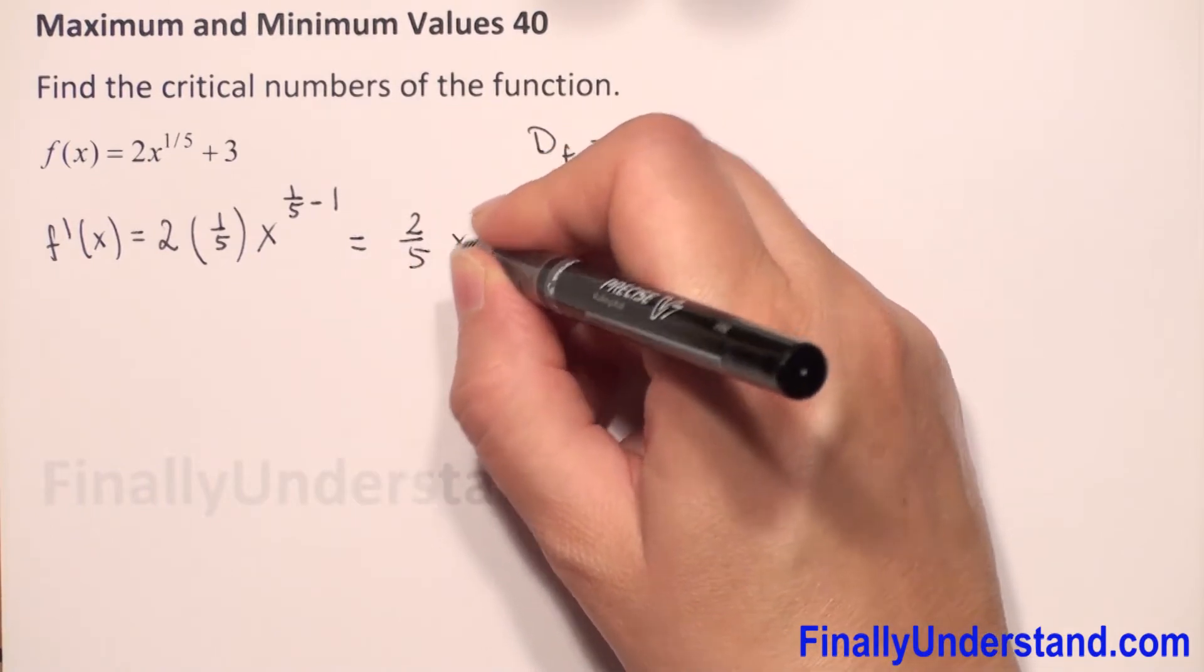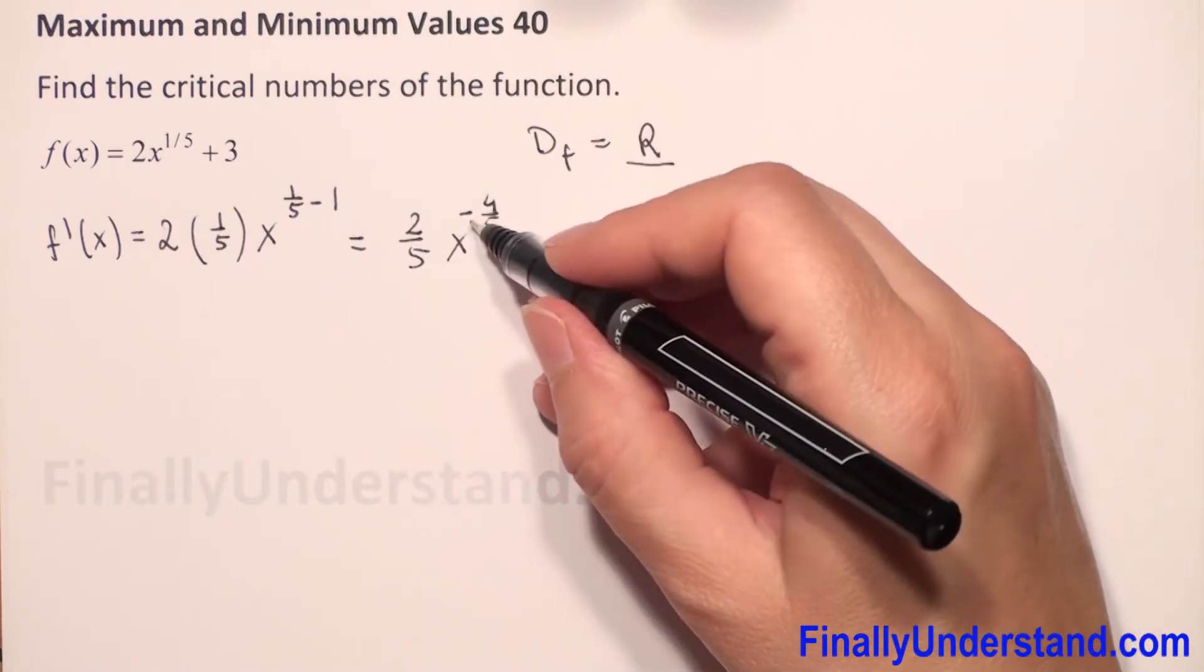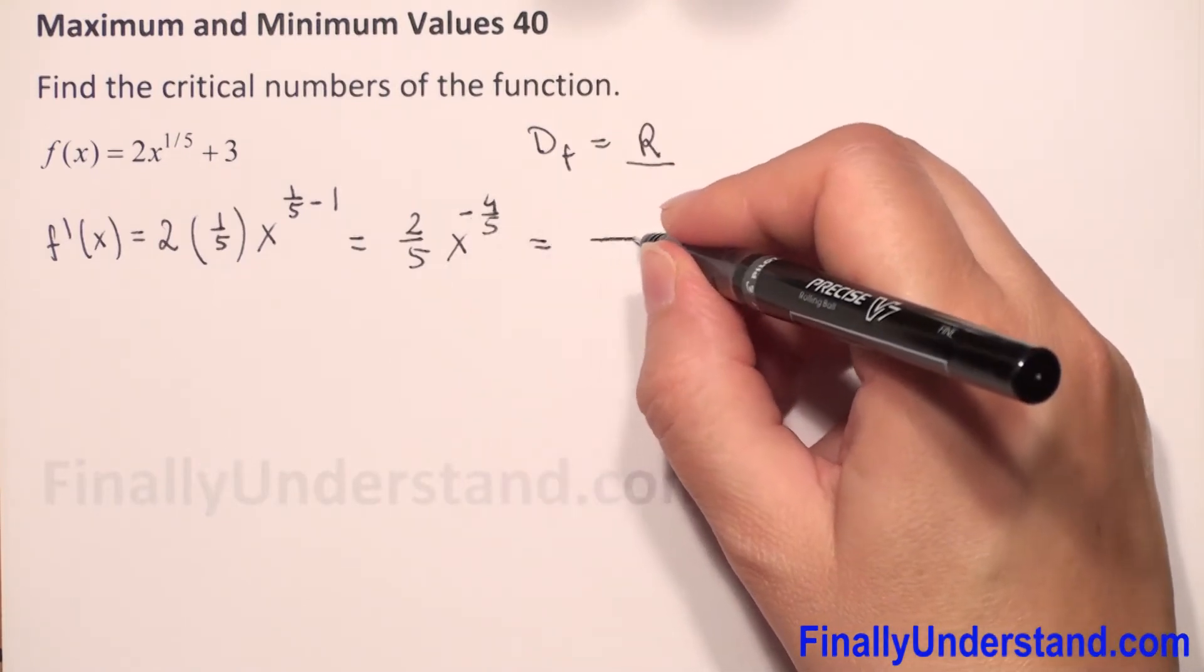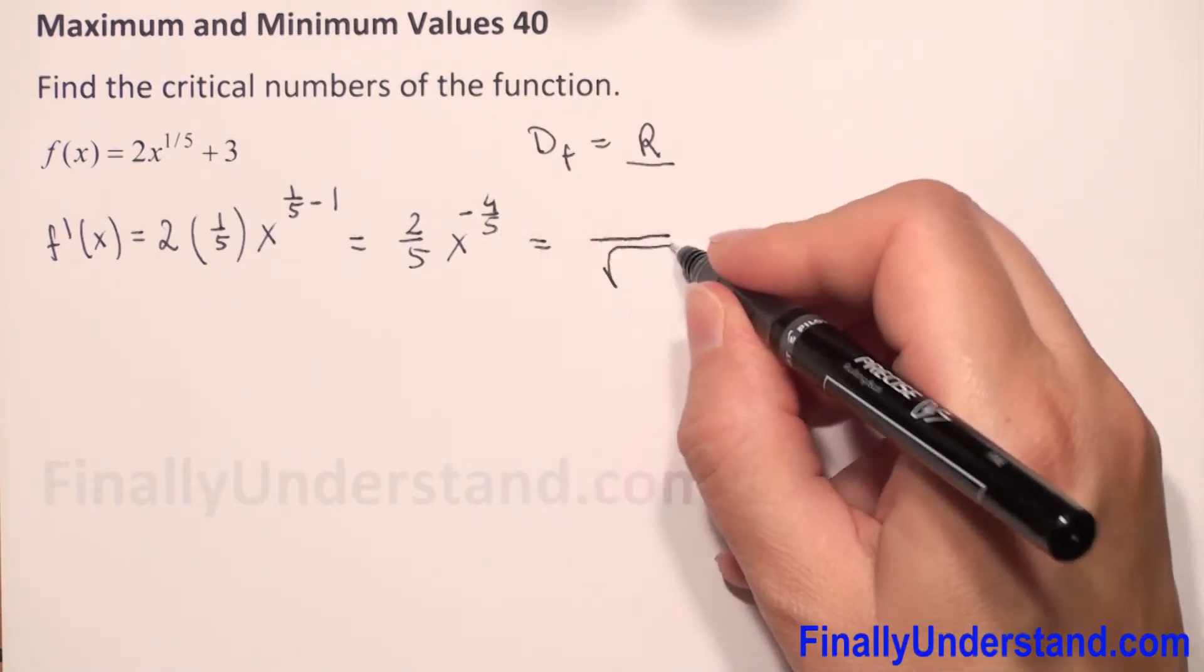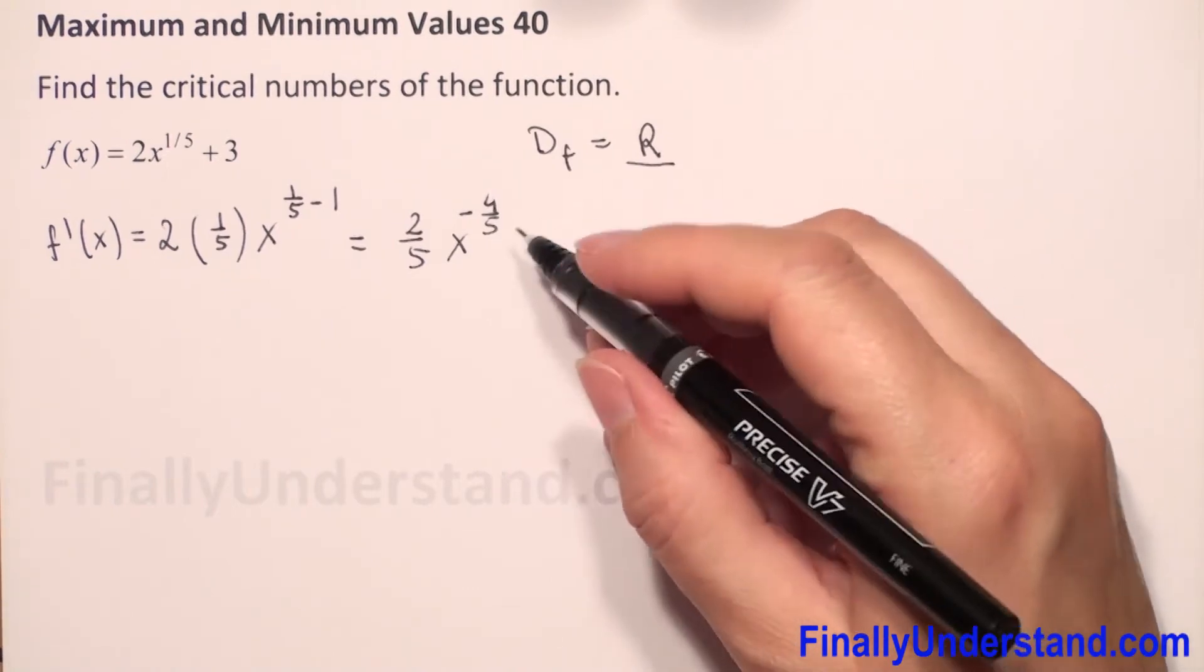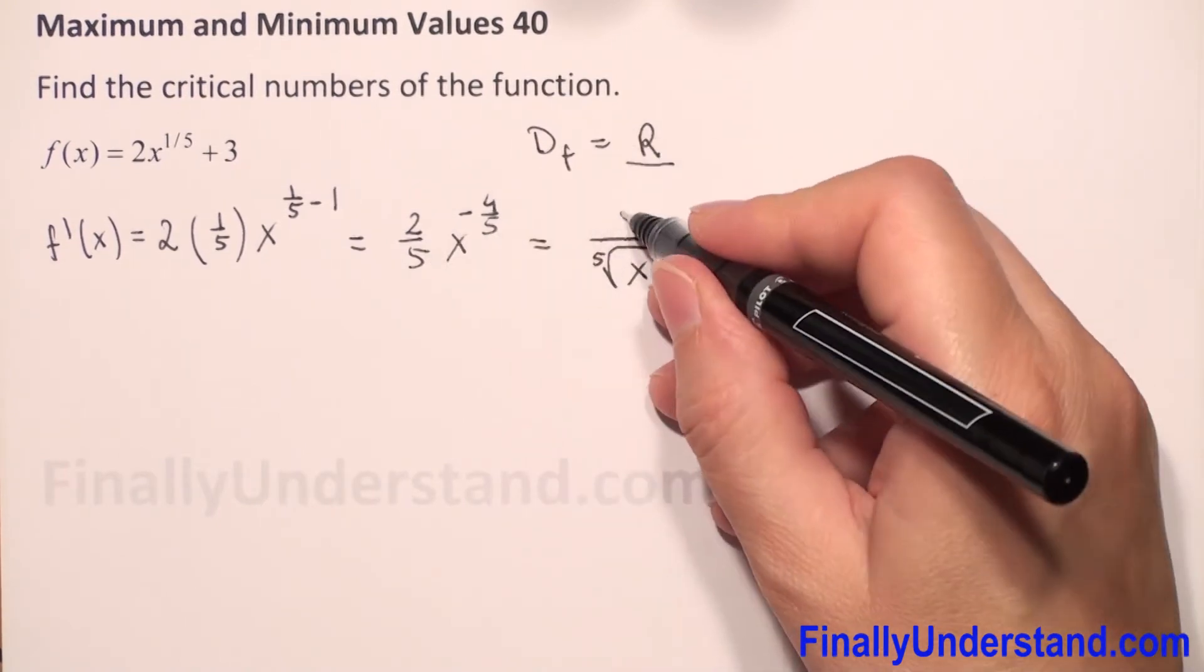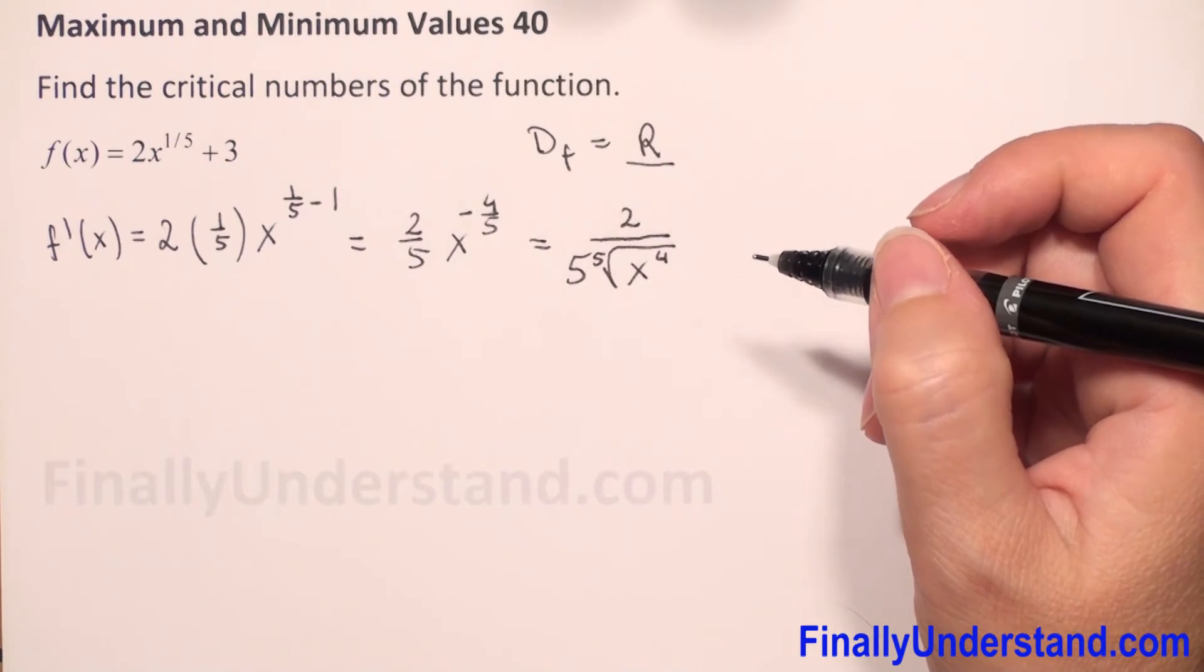This is equal—the negative sign means we have to put this x to the denominator. And because we have 5 in the denominator, we will have fifth root of x to power 4. And what else? We have to copy 2 and 5. We can put this in the numerator.